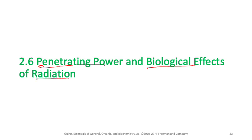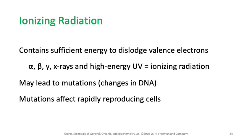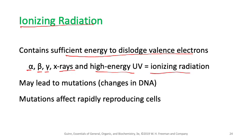Ionizing radiation contains sufficient energy to dislodge valence electrons. Alpha particles, beta particles, gamma rays, X-rays, and high-energy UV rays are all examples of ionizing radiation. Because of their high energy, when they contact biological samples they can cause mutations by damaging or breaking DNA, changing its composition.